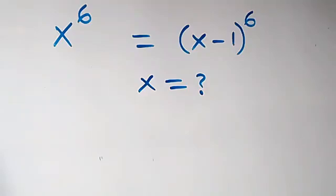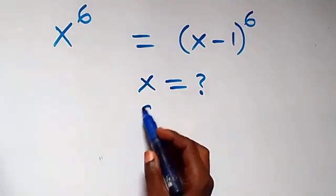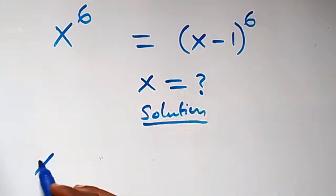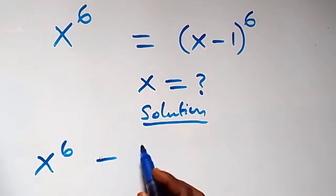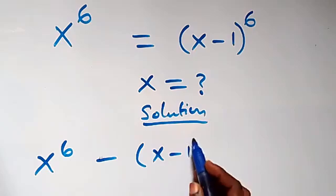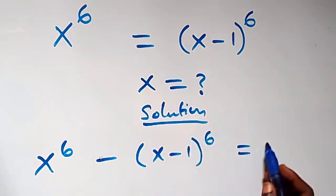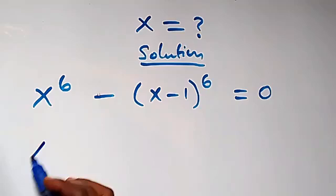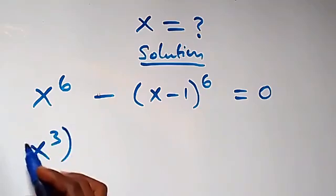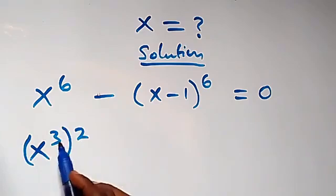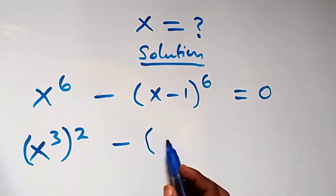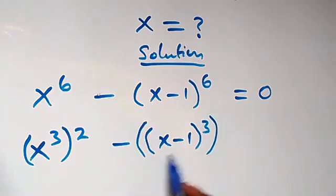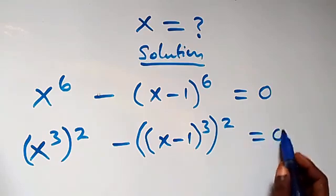Hello, you're welcome. How to solve this nice exponential equation. Taking the right-hand side to the left-hand side, we have x raised to power six minus bracket x minus one raised to power six equals zero. We can write this as x raised to power three, squared, minus bracket x minus one raised to power three, squared, equals zero.